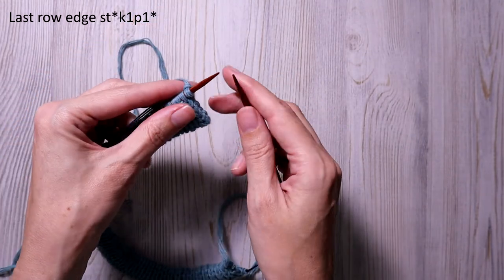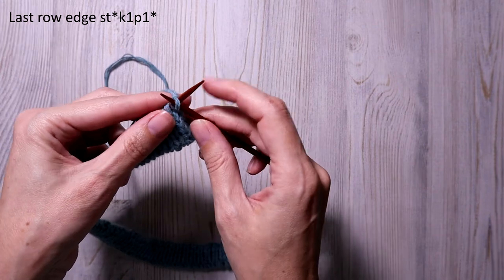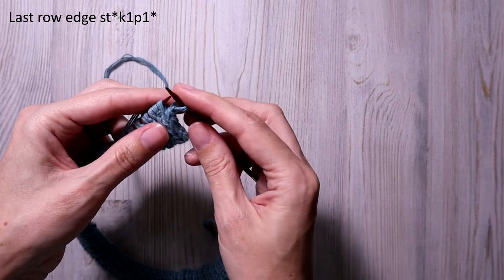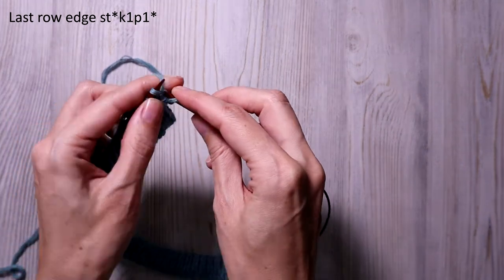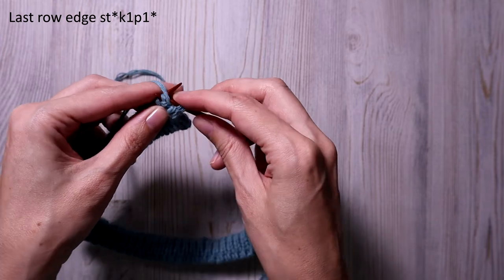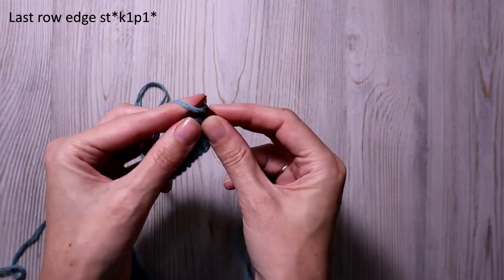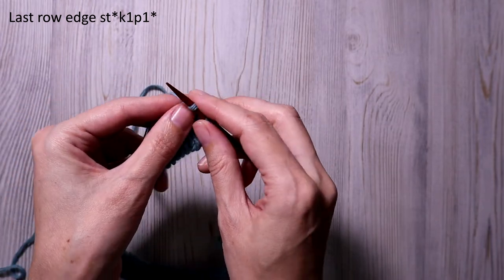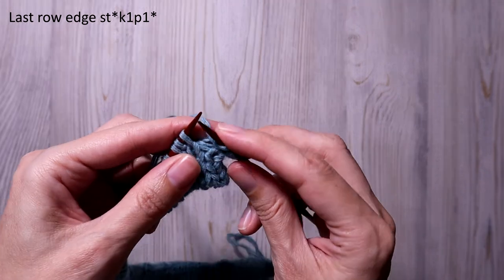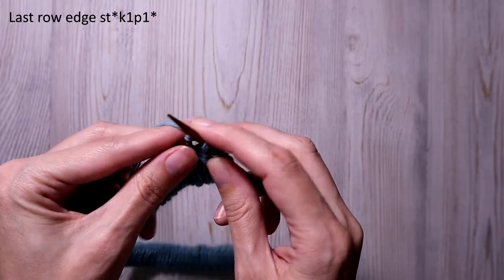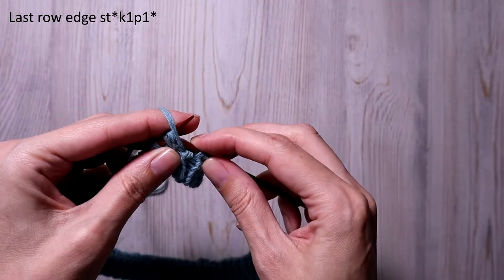Well, and the last row of hollow rib I'm going to knit this way. Knit 1, purl 1, knit 1, purl 1, as I knit the usual rib. This row will close the hollow rib.